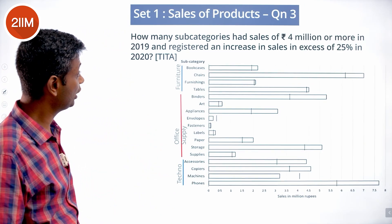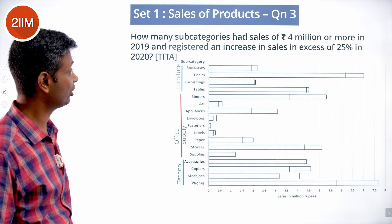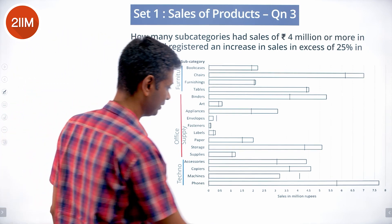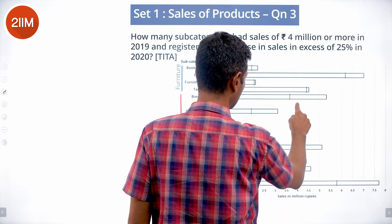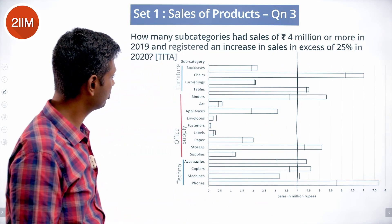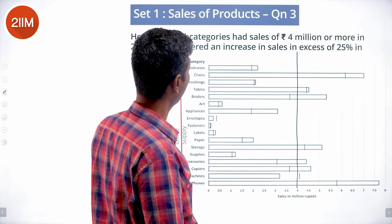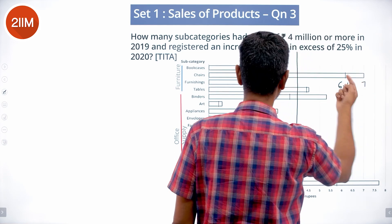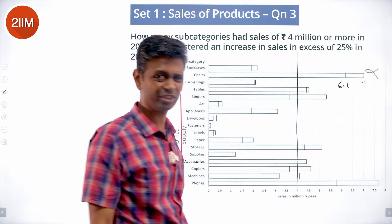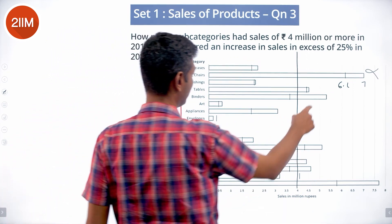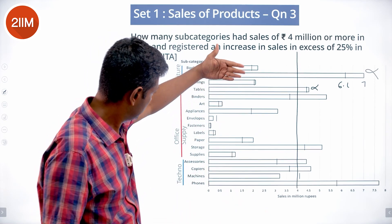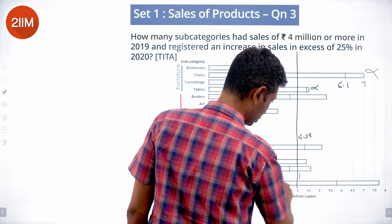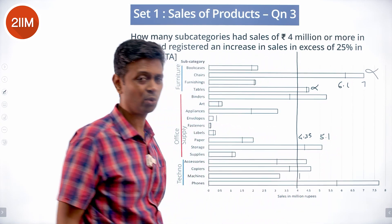How many subcategories had sales of 4 million or more in 2019 and registered an increase in sales in excess of 25 percent in 2020? Looking at subcategories above the 4 million line in 2019: chairs goes from 6.1 to 7 — that's not 25 percent since 25 percent of 6 is 1.5. Tables we can forget about. Binders doesn't even feature.